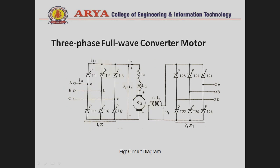The full converter used for the armature circuit is operated at firing angle alpha, and the full converter for the field windings is operated at firing angle alpha1. For regenerative purposes, the polarity of the counter EMF is reversed by reversing the field excitation, by making the firing angle delay of the converter more than 60 degrees.